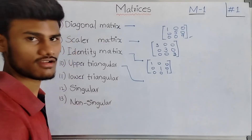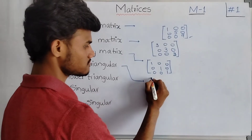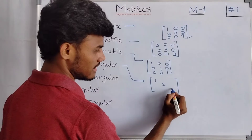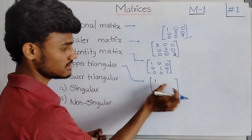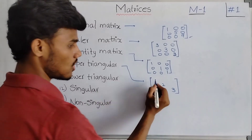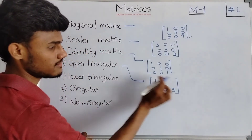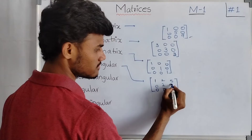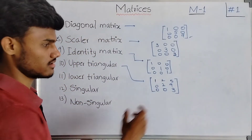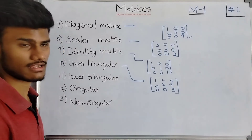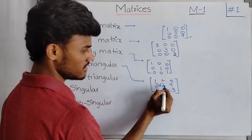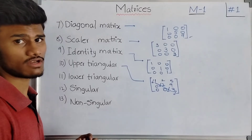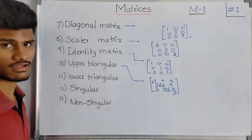Now coming to upper triangular matrix. What is meant by an upper triangular matrix? An upper triangular matrix is a matrix in which the elements below the diagonal elements are equal to 0, and the elements above the diagonal elements are not equal to 0 — they can be any number. See here: all the elements under the diagonal elements are equal to 0, and the elements above are not equal to 0. This is called an upper triangular matrix.